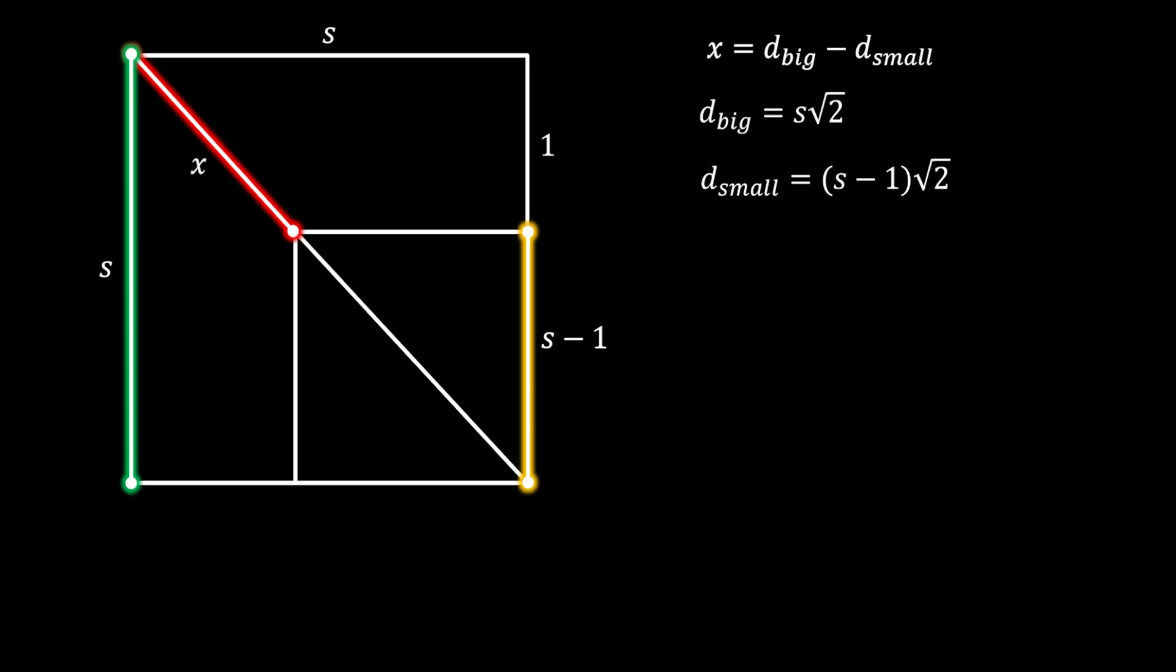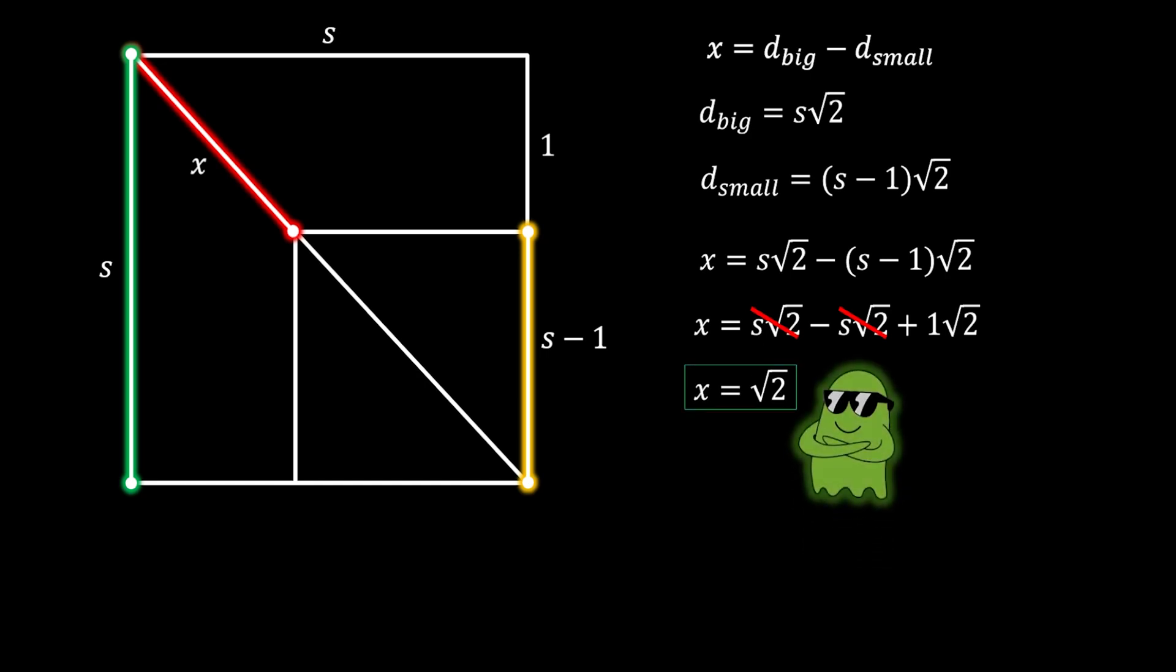So now, we can just substitute those two values in our first equation, we will expand it, then we can simplify S square root of 2, and we will get that X must be equal to square root of 2, and again, we have the same solution.